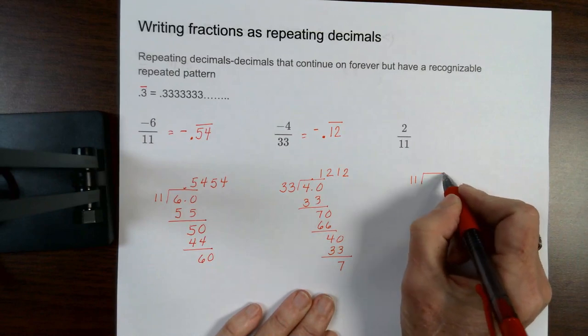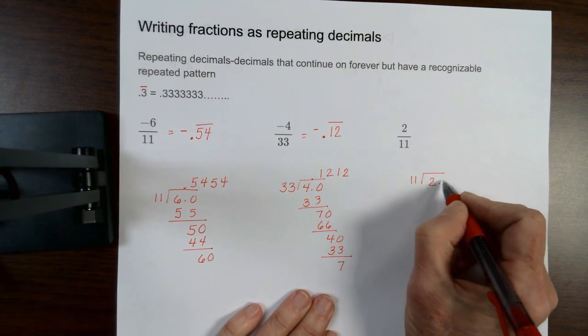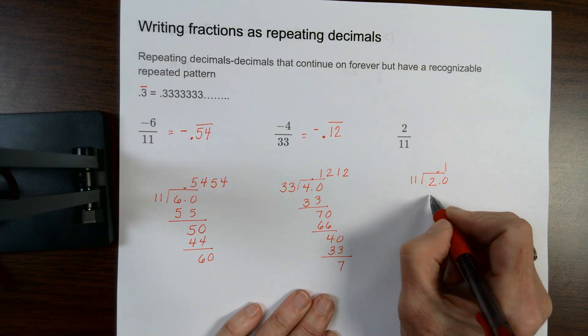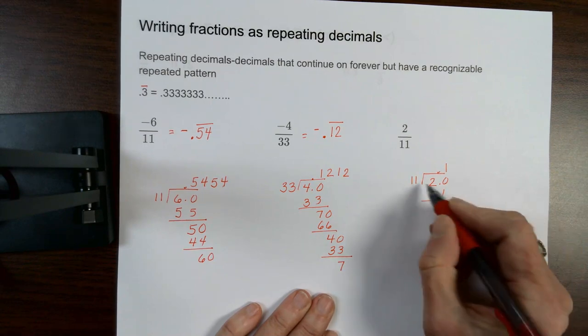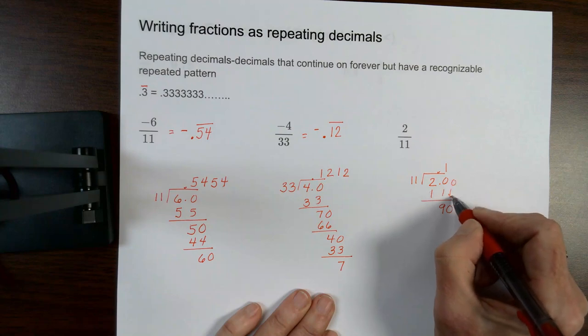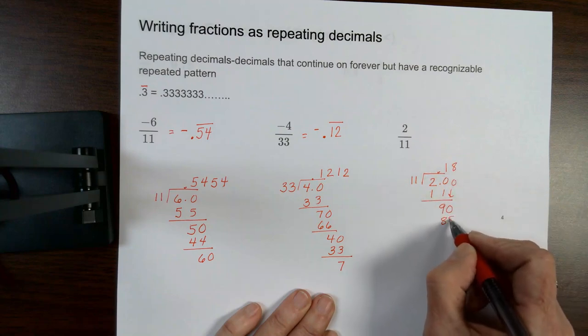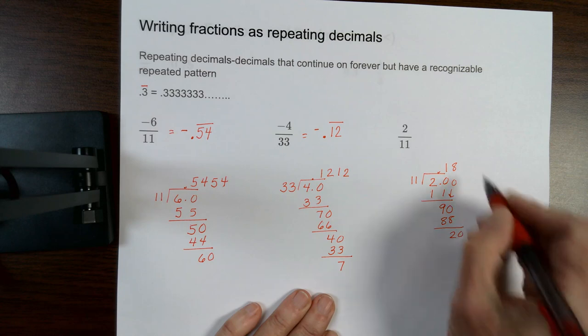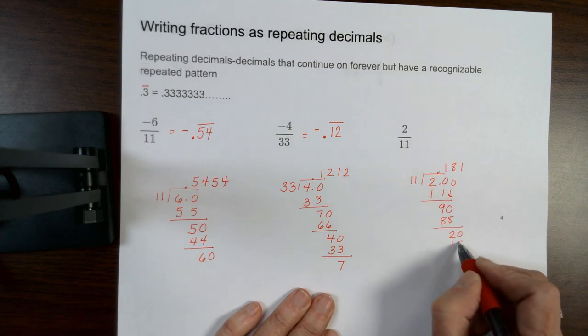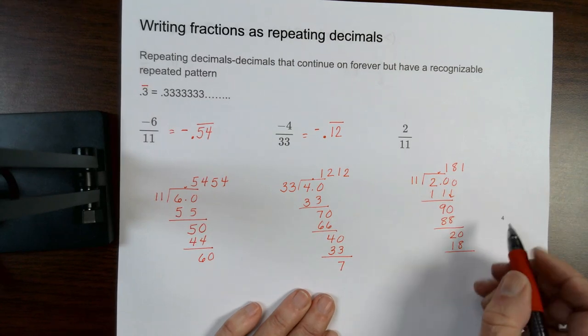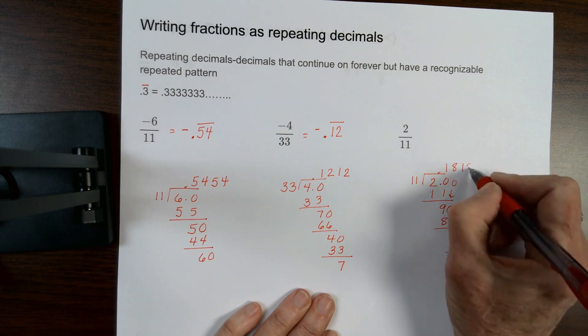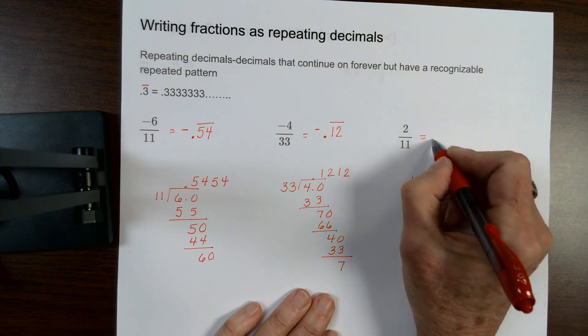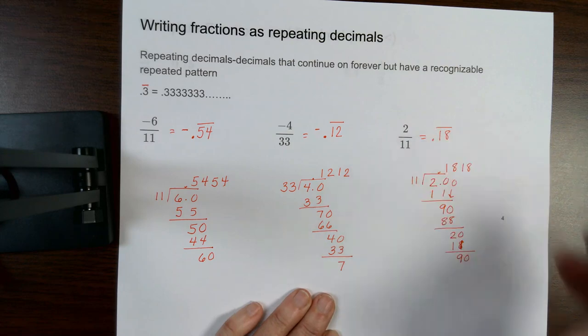11 goes into 2. Decimal and a 0 goes 1 time. Subtract. Add a 0 and bring it down. Goes 8 times. And then I'm back to the 2. Oops. That's an 11 here. Sorry about that. Okay. And then it's got an 8. So I know my pattern is 0.18 with a line over it.